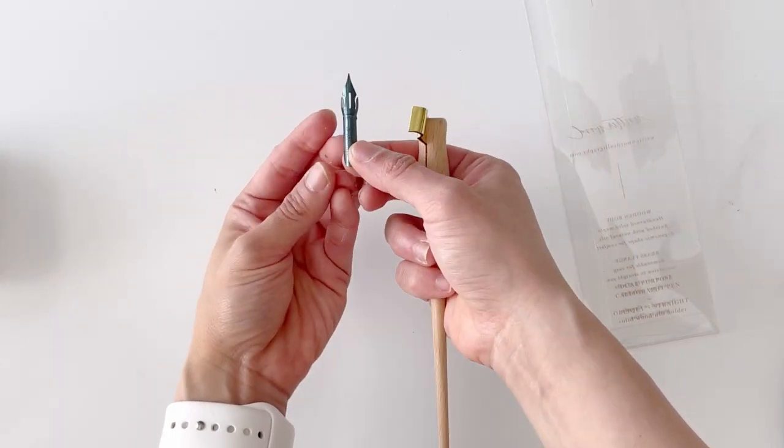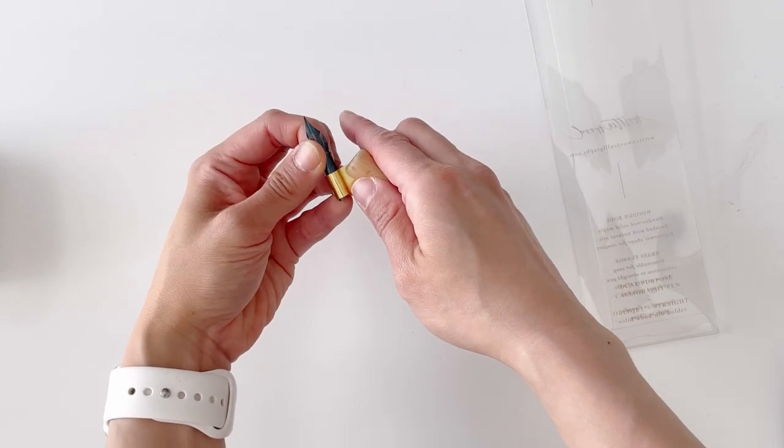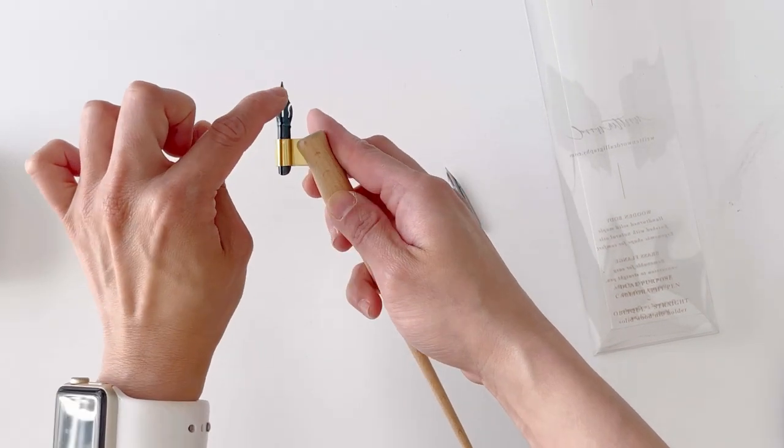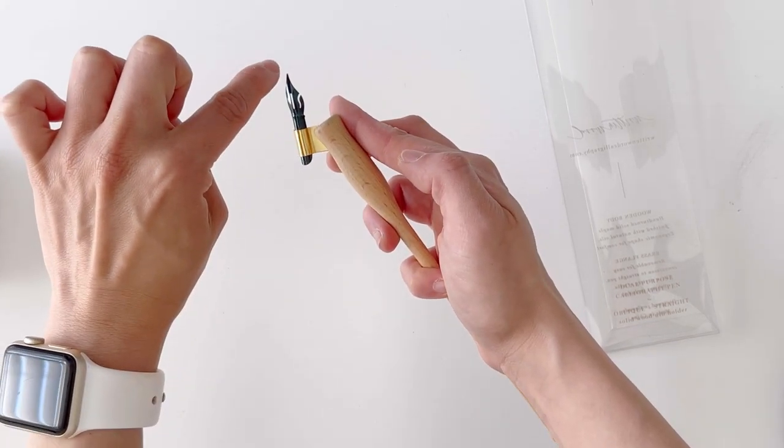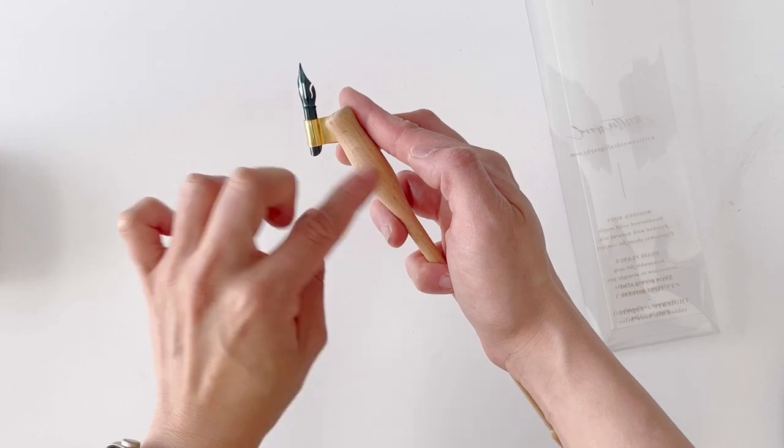Let's put the Brause Steno nib this time around. With the Brause Steno nib, you want to make sure that the tip of the nib is at the center axis of the pen, so if I drew an imaginary line it would go right in the middle here.